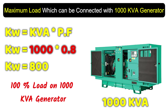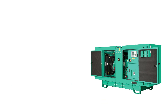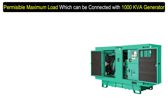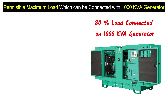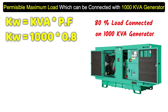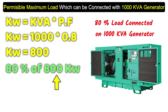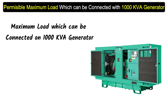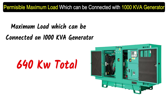This answer of 800 kW is for 100% load. Now, we always connect 80% load to our generator. To find the 80% load for a 1000 kVA generator: first calculate 100% load (1000 × 0.8 = 800 kW), then find 80% of that — multiply 800 by 80 and divide by 100. The answer is 640 kilowatt. That is the maximum load we can connect.